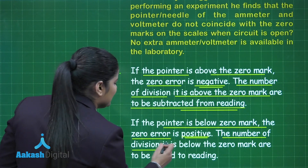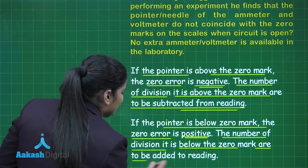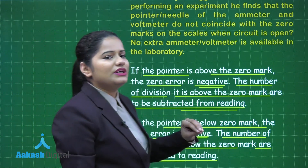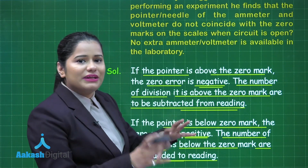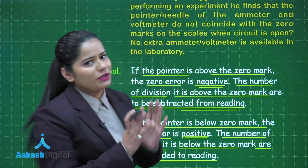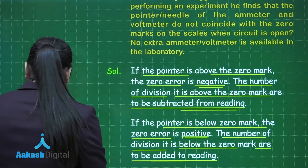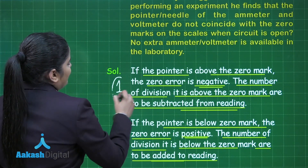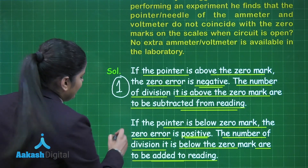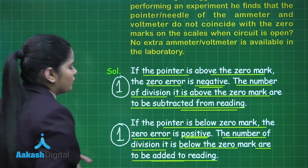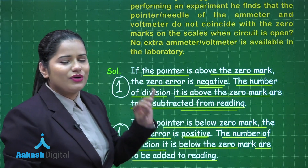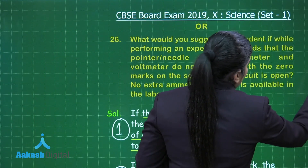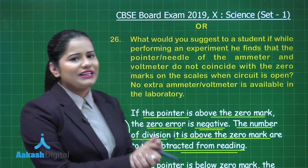If the pointer is below the zero mark, the zero error is positive. In that case, the number of divisions it is below the zero mark are to be added to the reading. This is how the student gets the correct reading from the defective ammeter or voltmeter. You get one mark for discussing negative zero error and one mark for positive zero error, scoring two out of two for this choice.